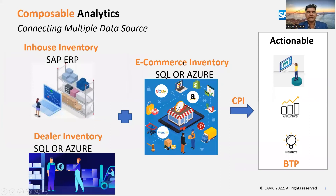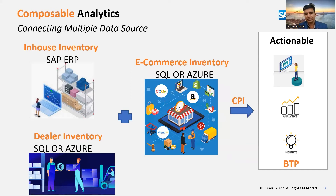Next, as mentioned, as composable analytics, we are connecting multiple data sources: SAP ERP, dealer inventory, plus e-commerce platforms — for example, Amazon and eBay. We are connecting all these data sources and bringing the data into a data layer in SAP BTP Business Warehouse Cloud. From there, we bring different actionable insights in SAP Analytics Cloud for forecasting and predictive planning.